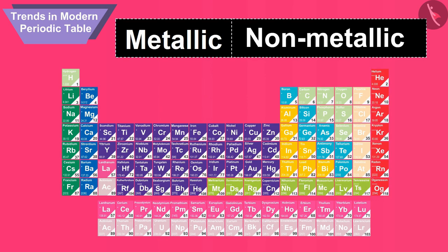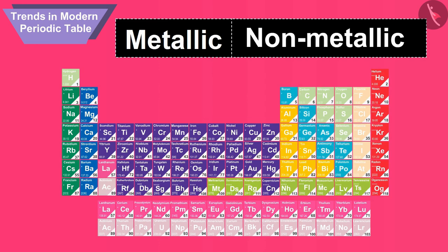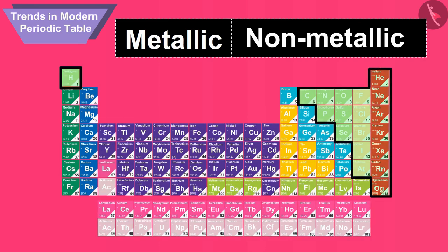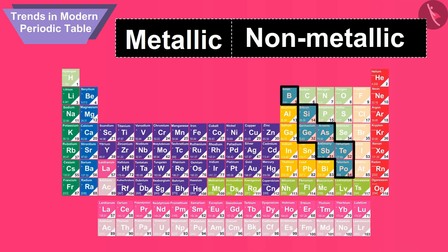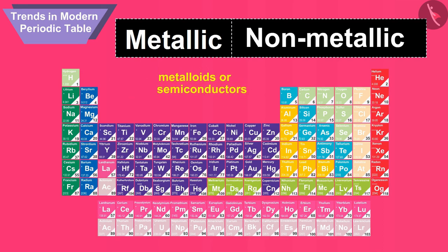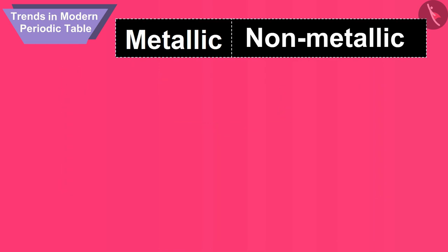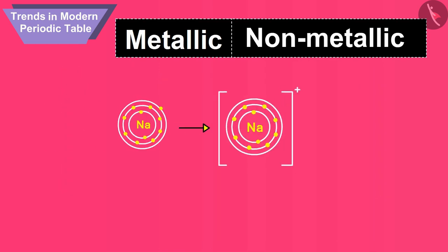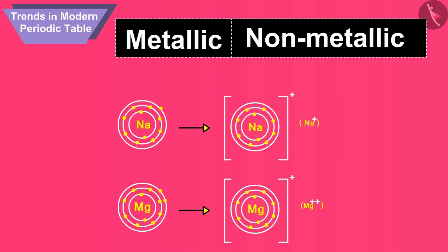Some elements in between the metals and non-metals form a zigzag line separating metals from non-metals. The borderline elements — boron, silicon, germanium, arsenic, antimony, tellurium, and polonium — are intermediate in properties and are called metalloids or semiconductors. Metals tend to lose electrons while forming bonds; that is, they are electropositive in nature.